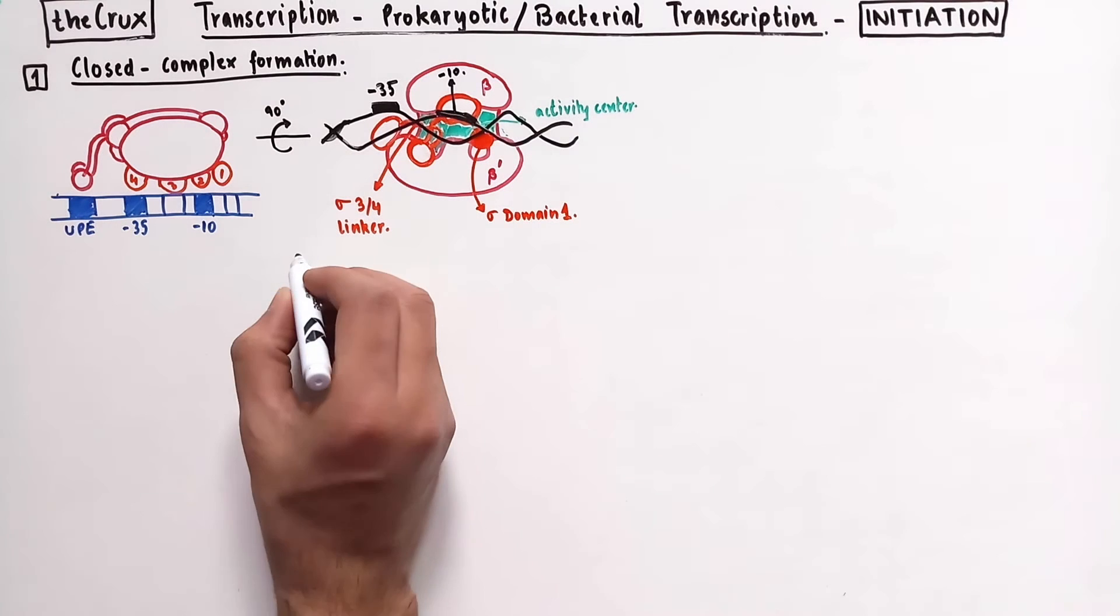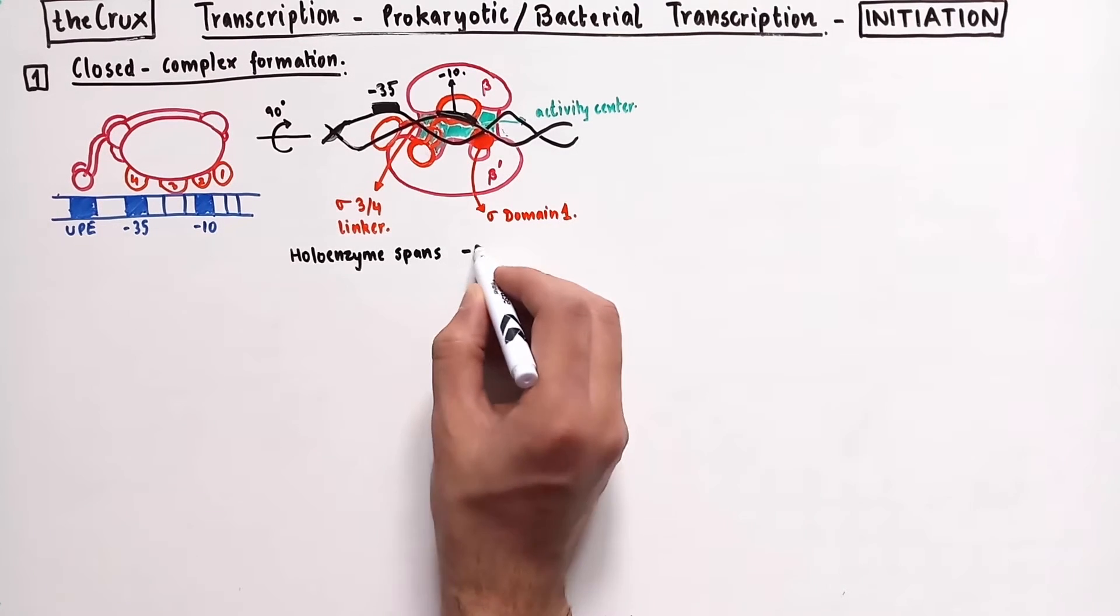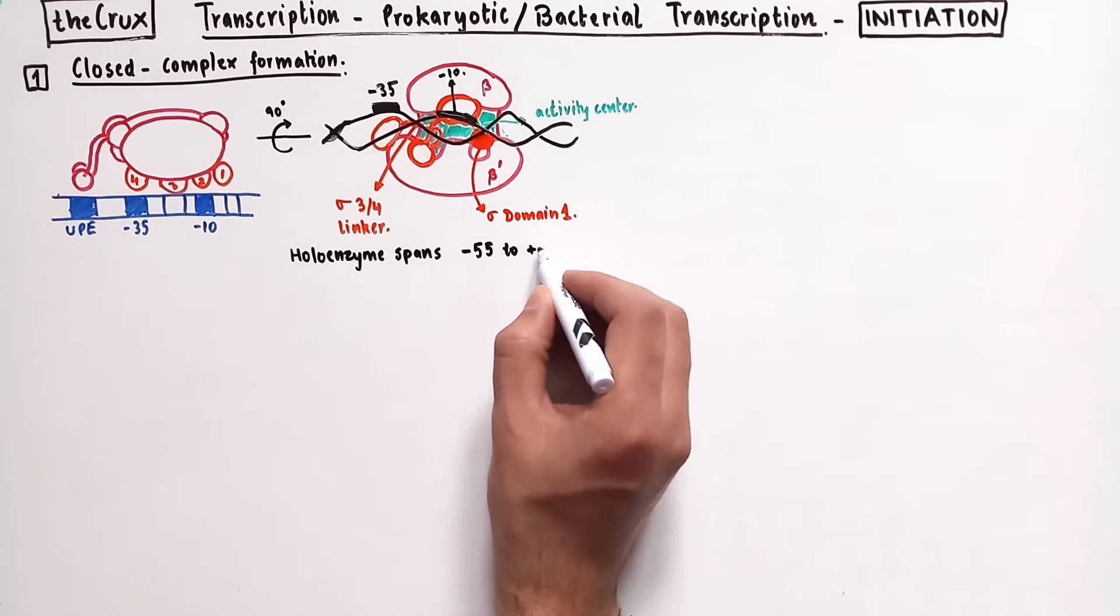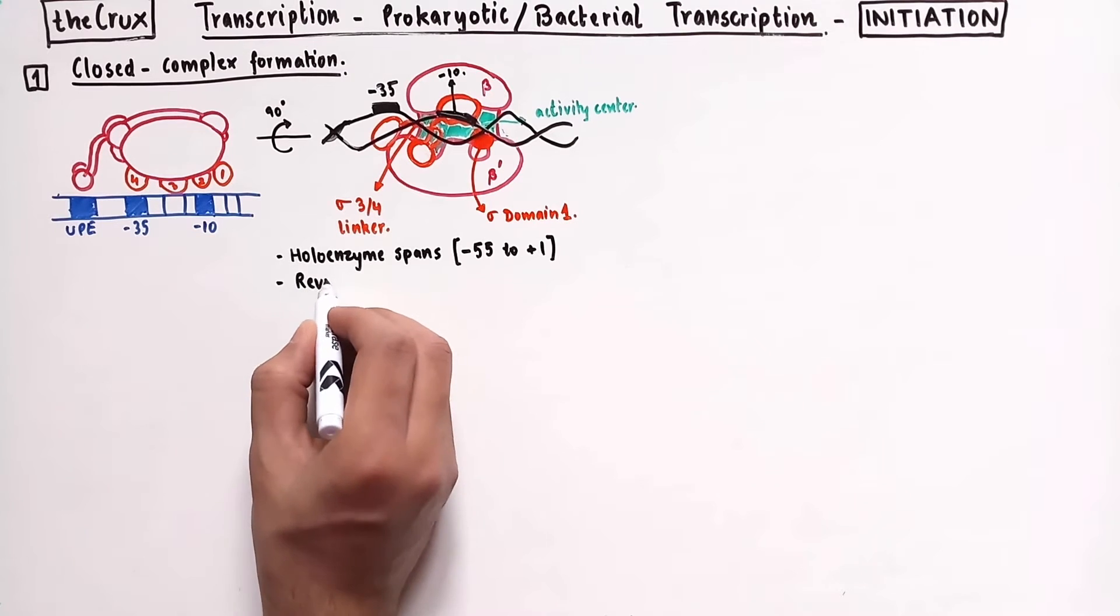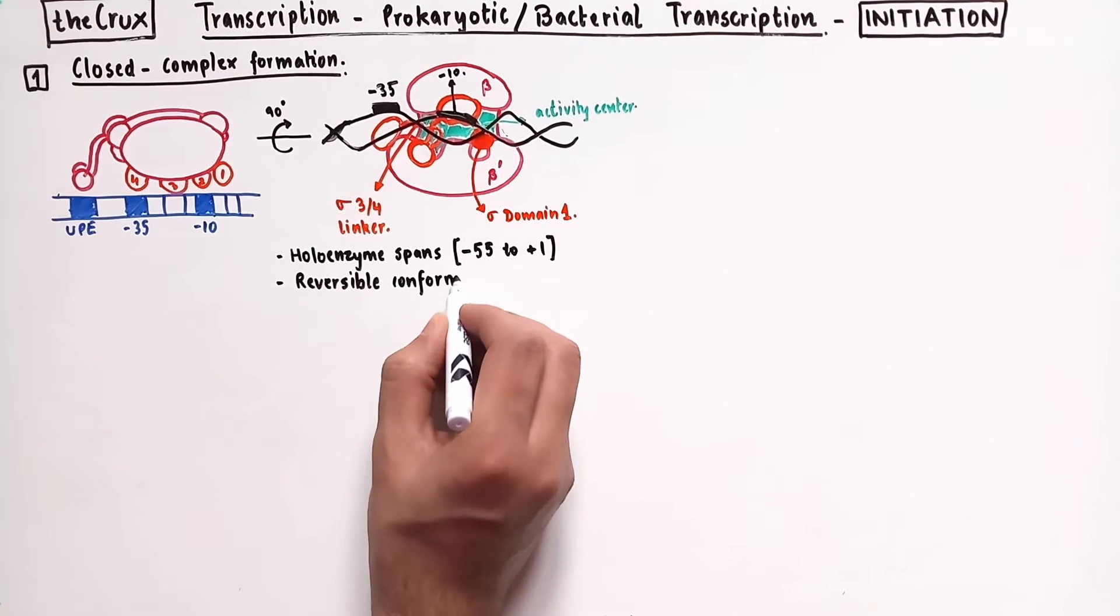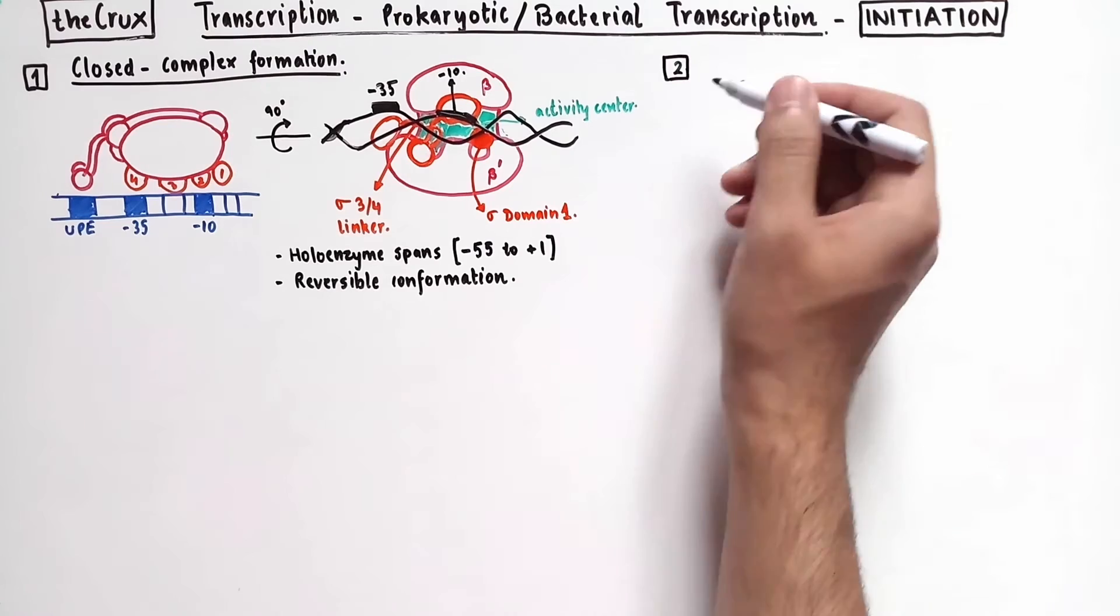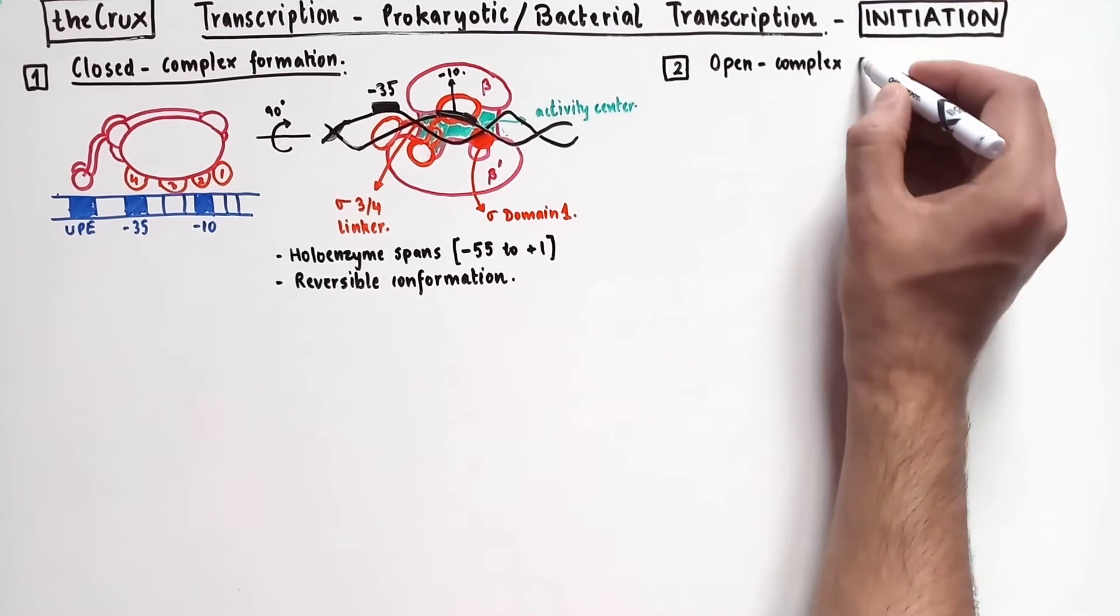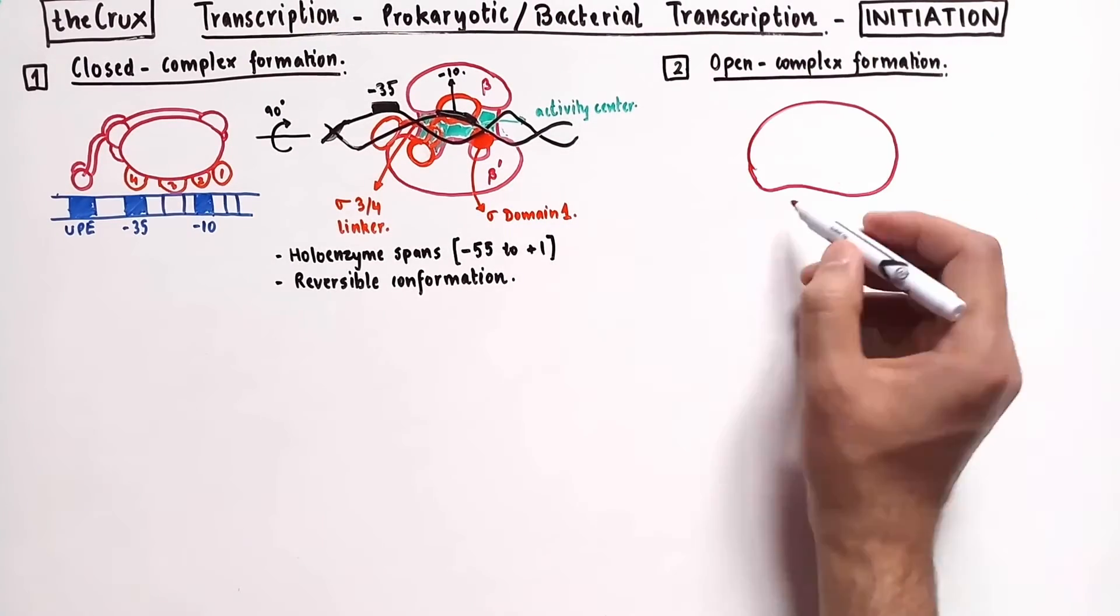If we look at the features of the closed complex, we see that it spans from negative 55 position where the UPE is present to around the plus 1 site, which is the transcription start site or TSS. This conformation is usually irreversible, meaning that at this stage, if the energetics are not favorable, the enzyme can easily disassemble. But if the energetics are favorable, then the closed complex transforms into an open complex, which is the second stage of initiation.